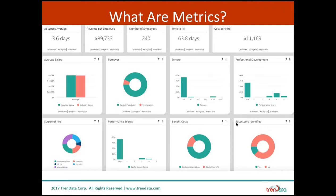Some other metrics, which might be a little more complex, might require some sort of graphical representation. As you can see down here, we have a source of hire to the lower left, which encompasses a number of different places where companies hire from and is broken up into a multi-component graph. We can also have metrics that represent data in buckets, such as tenure and professional development — what your performance score is, whether you're in development or not, and how long you've been with the company.